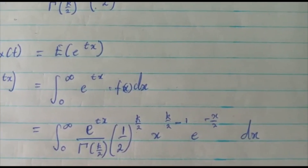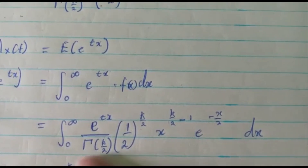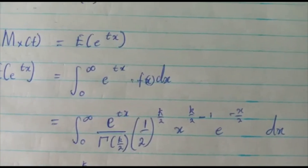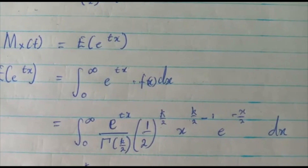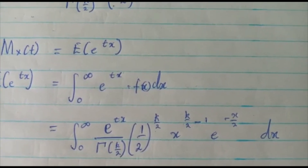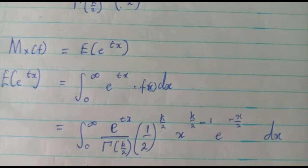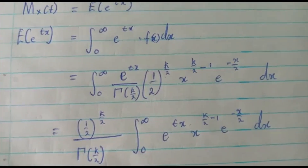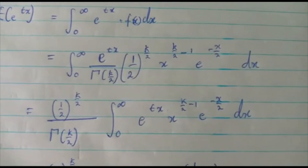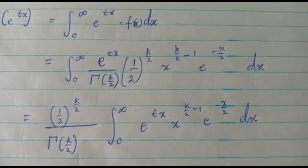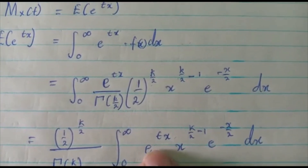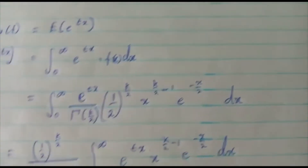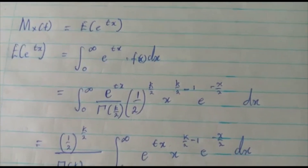We start to remove our constants: gamma of k over 2, and another constant half to the power k over 2. These go outside the integral sign. At this stage we are going to join our exponentials — e to the power tx and e to the power negative x over 2.